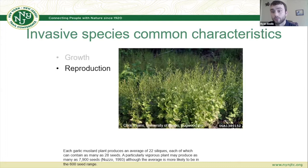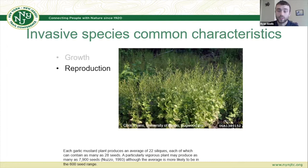Another characteristic of garlic mustard is that its seed pods are explosive — when seeds are ripe, a small disturbance such as brushing past the plant will cause the seed pods to explode and expel seeds further away from the parent plant.